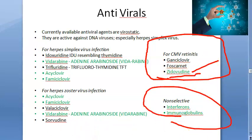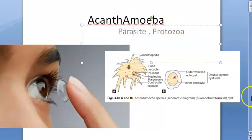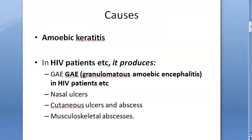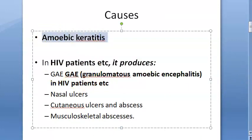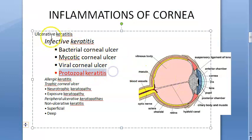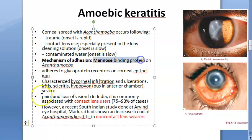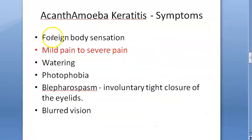Acanthamoeba keratitis: caused by the free-living amoeba Acanthamoeba, a protozoan parasite. Mechanism: mannose-binding protein on acanthamoeba adheres to glycoprotein receptors on corneal epithelium. Common in contact lens users who wash lenses with water; now also seen in non-contact lens users.